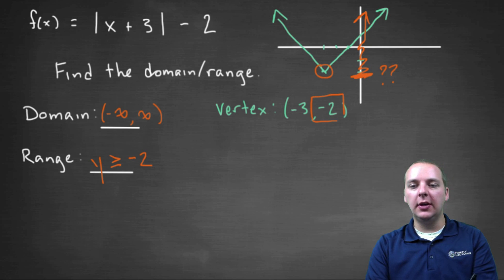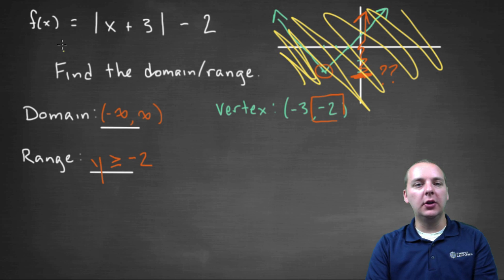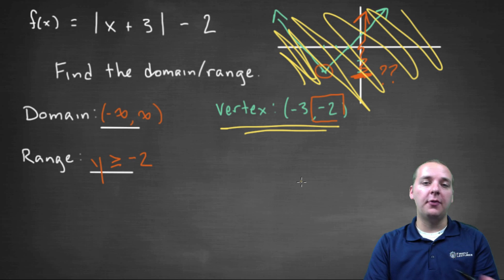So notice, even if we didn't have this graph right here, as long as you could look at this function, and see where the vertex was, and you knew if the graph opened up or down, then you would just say the domain is all real numbers, and the range is Y greater than or equal to negative two right here.